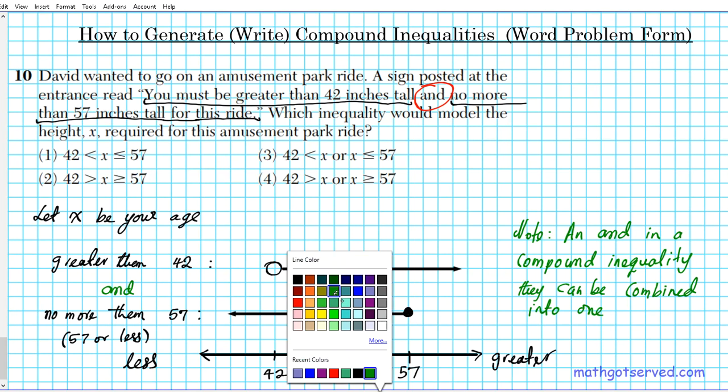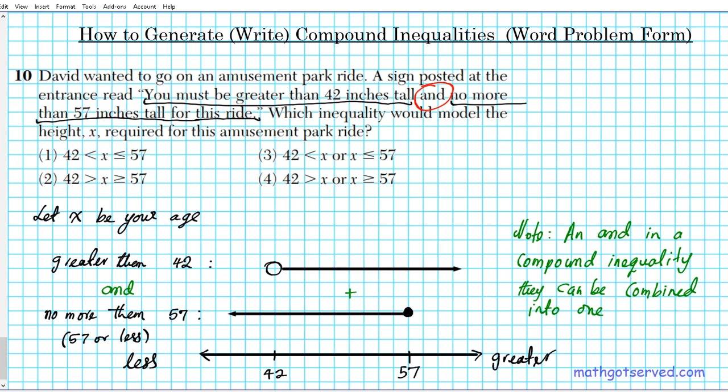To illustrate, let's see how the following compound inequality works. For example, you have a certain number y, y is greater than 2, and y is less than 10. This compound inequality can be combined into one. Since y is greater than 2, that means 2 is less than y, and then y is less than 10. So you can always combine, in most cases, you can combine inequalities with an and situation.